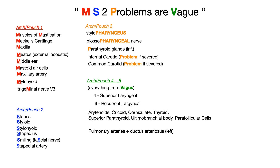That's really it. I know I flew through that, but the point is it's not too bad if you use this mnemonic. MS2 problems are vague: if it has an M, guess number one; if it has an S, guess number two; if it has a P, guess number three; if it's related to the vagus nerve, guess four or six. In broad strokes, you'll get at least half the questions right by guessing, and if you go through the full lists, you can approach a 100% correct answer rate. Keep up the great work.